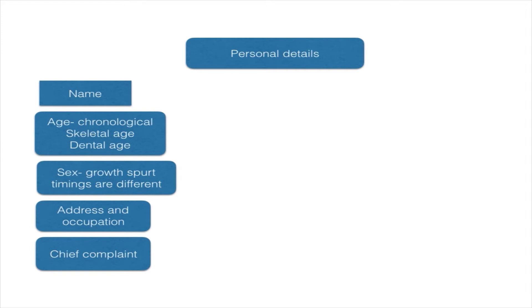Next is the sex of the patient. Growth spurts are different in the two sexes — the timings of growth spurts are different — that's why we record the sex. The address of the patient is recorded to communicate with the patient, and occupation is generally recorded to know the socioeconomic status of the patient.